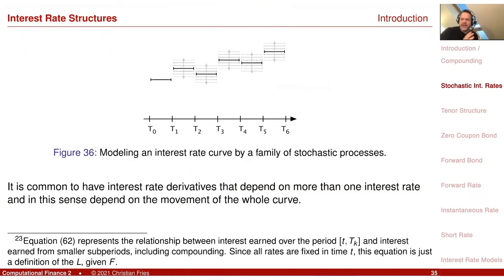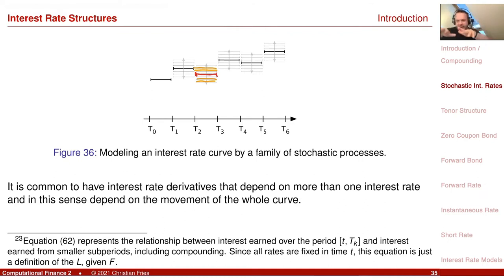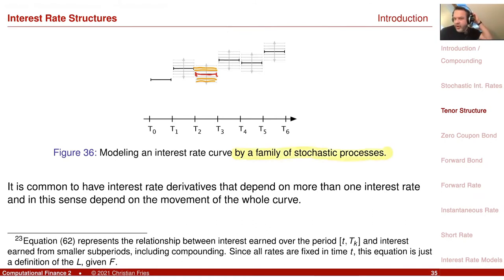Let's derive L from objects we can observe on the market. Then L becomes a nice quantity we'd like to model by a stochastic differential equation. When we model L by an SDE, we get all these small interest rates for each period — each starts at a certain value and can change over time, moving up or down. So we get a curve of interest rates where each individual rate can move: a family of stochastic processes.